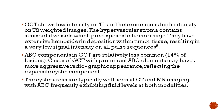On MRI, we can see low intensity and heterogeneously high signal on T2-weighted images. The solid part of the lesion contains sinusoidal vessels which predispose to hemorrhage, and there may be extensive hemosiderin deposition within the tumor, which may show low signal intensity on both T1 and T2-weighted images and blooming on gradient images.